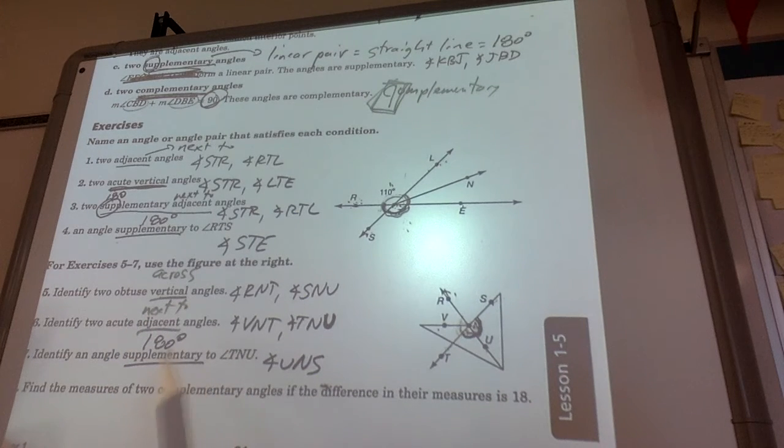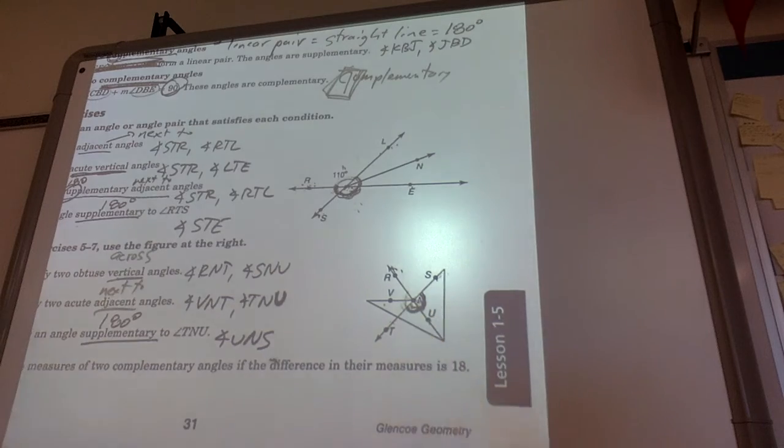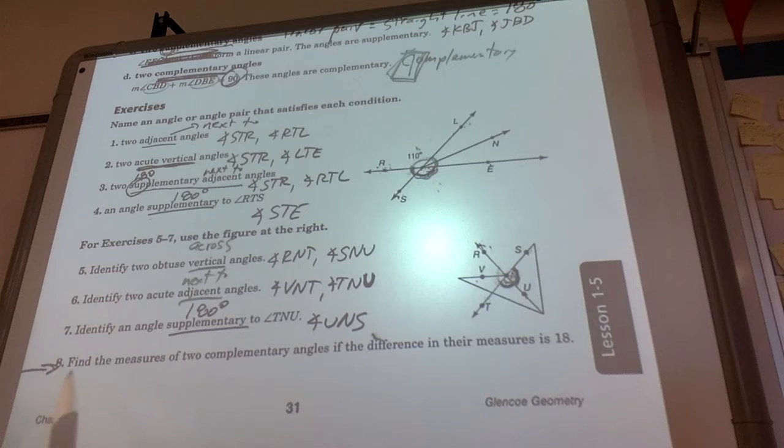Identify an angle supplementary, so 180, to TNU. TNU, obviously UNS gives you that 180 degrees. Makes that linear pair right there. I'm going to pick up and teach you how to do a little word problem number eight in the next section.